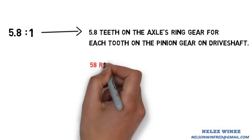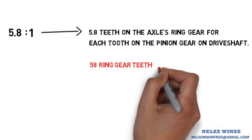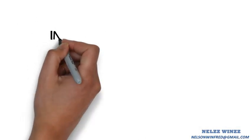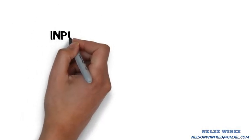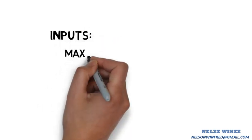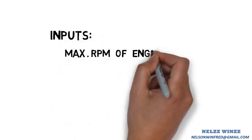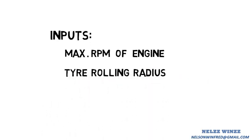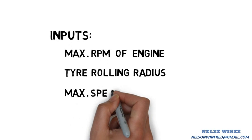We can say 58 ring gear teeth for 10 pinion gear teeth. Here we need some inputs to find rear axle ratio theoretically. The first one is maximum RPM of the engine, the second is tire rolling radius of the vehicle, and finally the maximum speed of the vehicle.